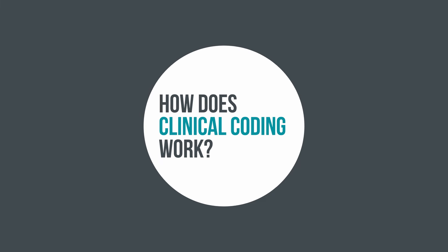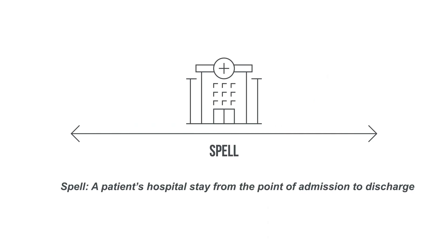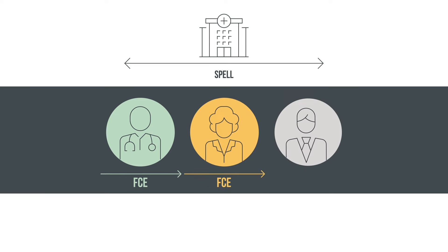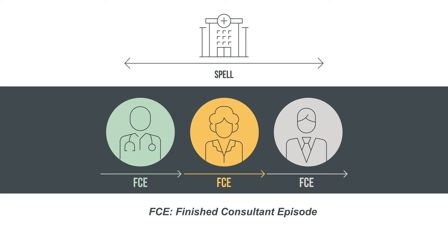So how does clinical coding work? A patient's hospital stay, from the point of admission to discharge, is called a spell. During their stay, a patient may be under the care of different consultants. This may be due to a change in responsible consultant or a move to a different speciality. The time period under each consultant is called a finished consultant episode, FCE, or episode of care. So a spell can be made up of a single or multiple FCEs.